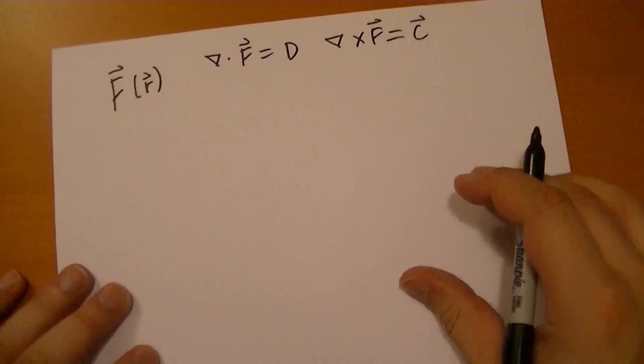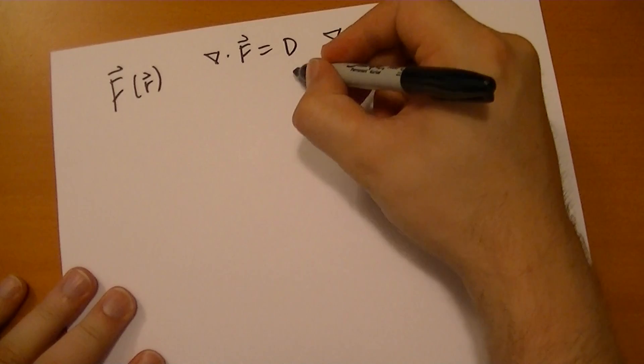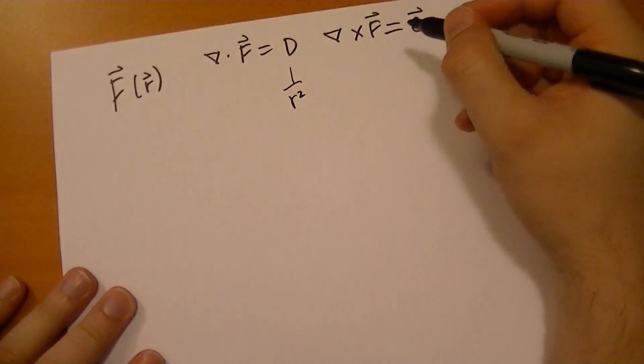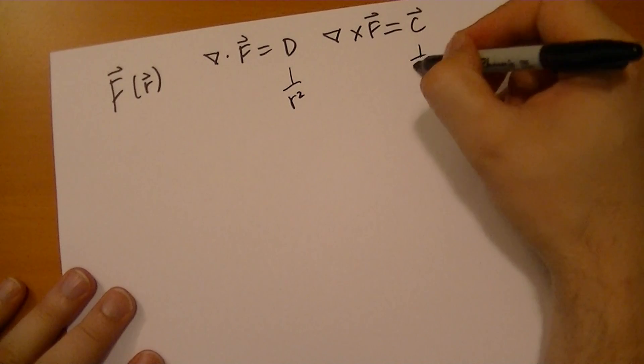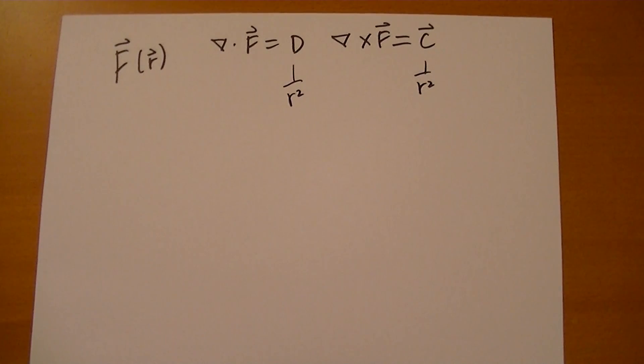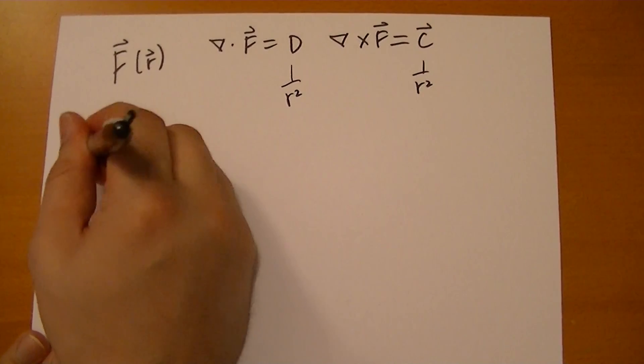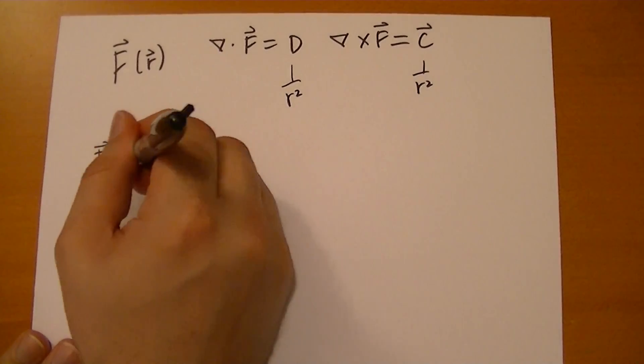as long as this tends to 0 faster than 1 over R squared, and the same goes for this. As long as these tend towards 0 faster than 1 over R squared, then, and as long as the field itself can be assumed to tend towards 0, the field is given by this formula.